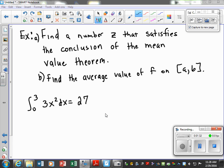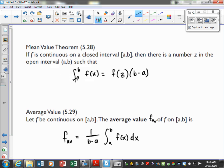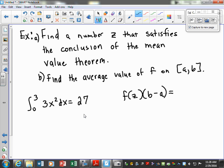We're just asked to apply that to our Mean Value Theorem. So f(z) times (b - a) is equal to the solution of our definite integral, so in this case that is equal to 27. Our definite integral equals this, so we know 27 is our definite integral. Now we're just going to be solving for z.